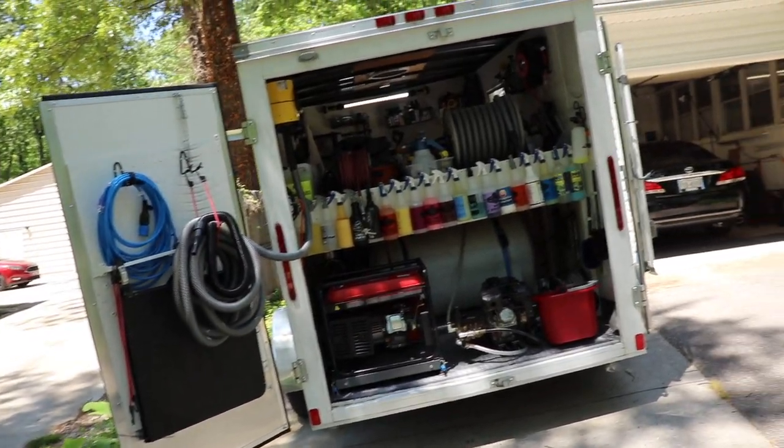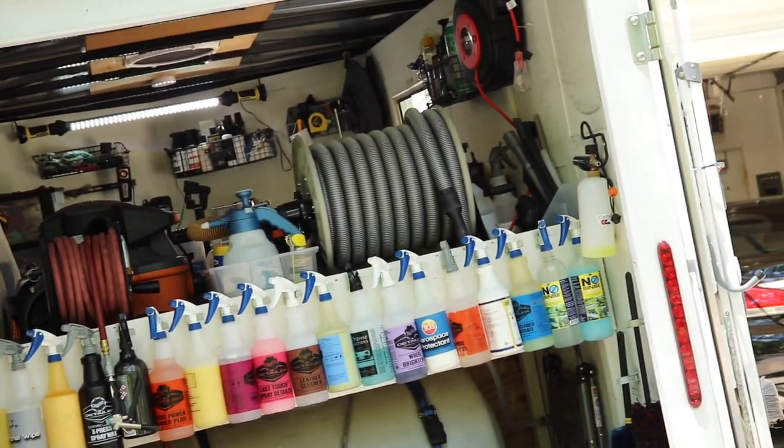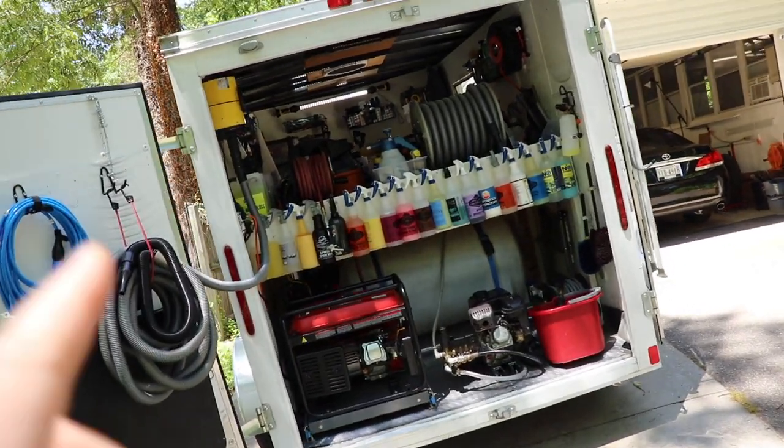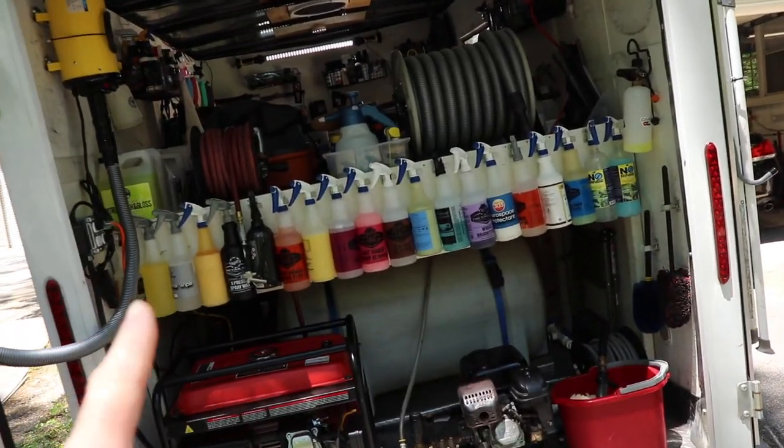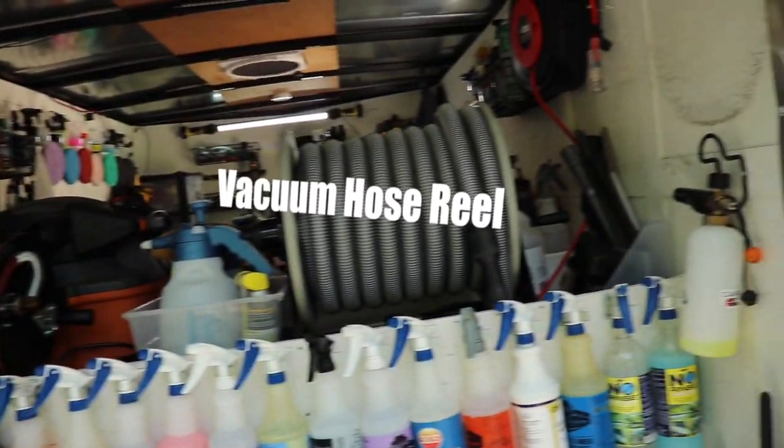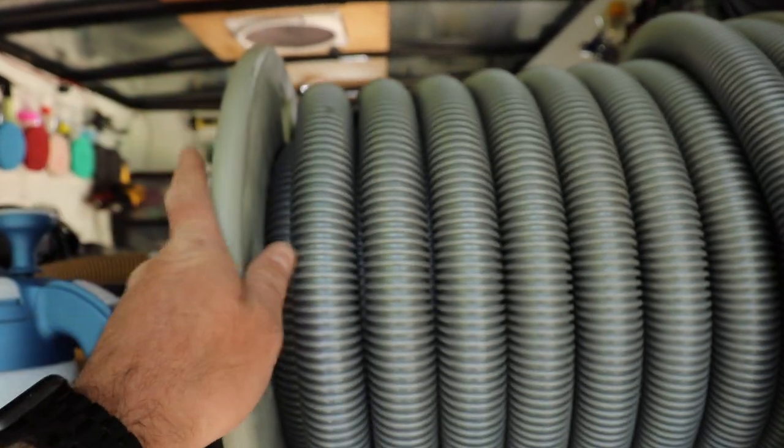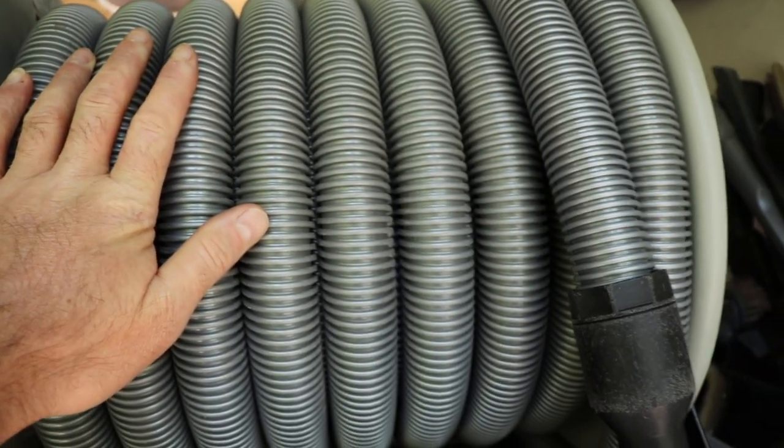So when you look at the trailer from the back here, you will start to notice a few things that have changed. Now we have the bottles that are all lined up here. You've already seen that in some of the past videos. I did that quite a while ago. But now you see some added things. Let's talk about this vacuum hose. This was one of the major upgrades that I wanted in our trailer.